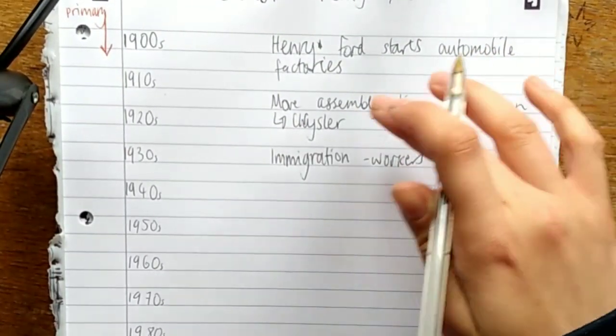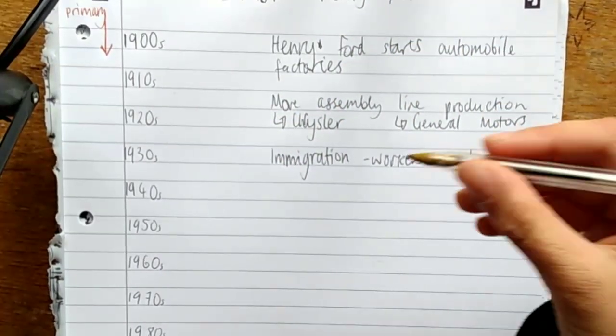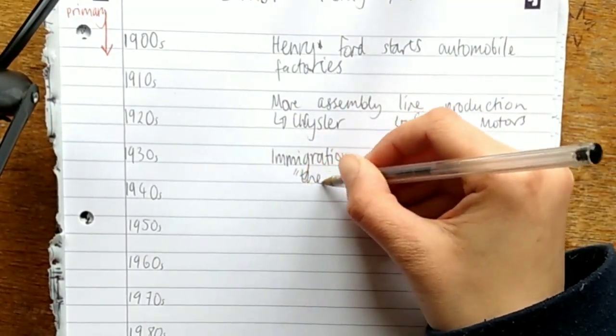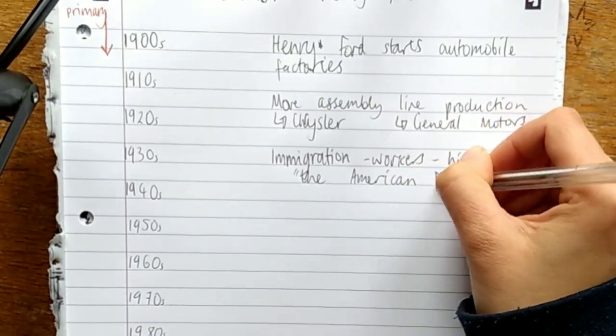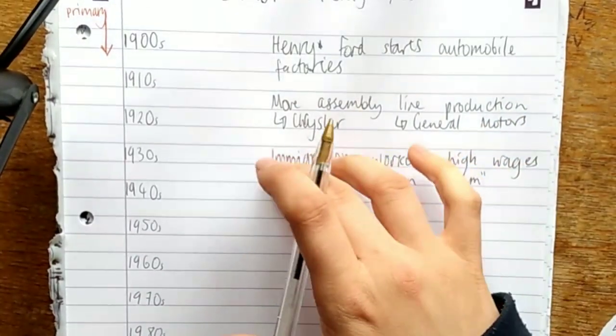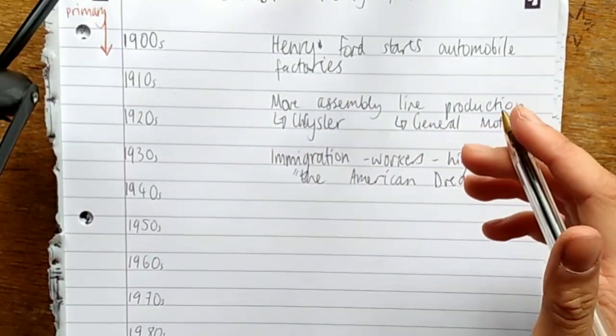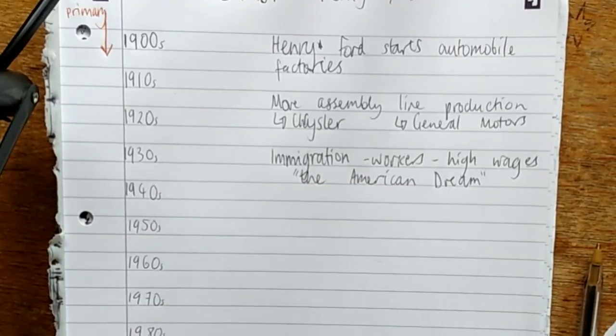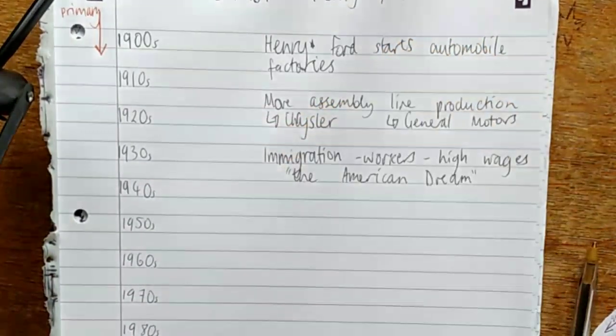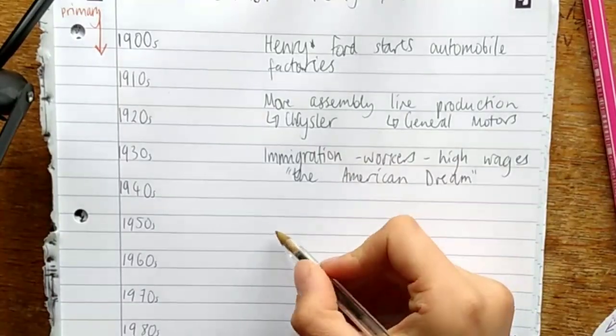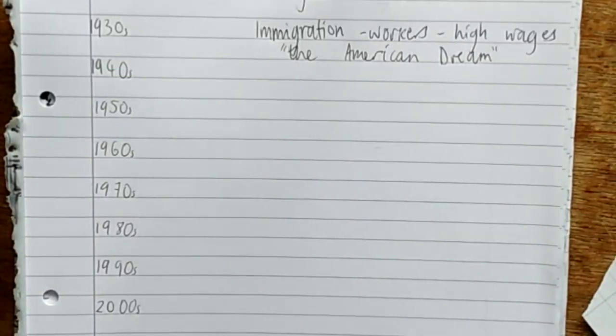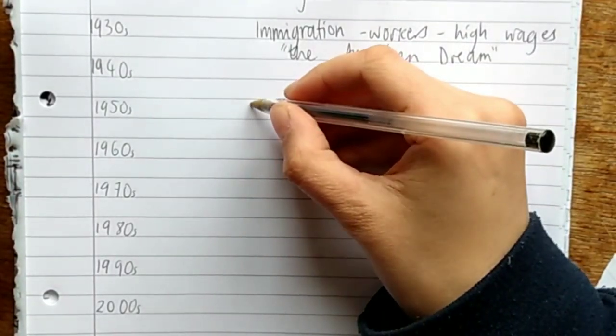During the roaring 20s, the economy boomed in Detroit and people came in to live the American dream. Americans could afford the cars that they were making because they had high enough wages to buy the cars that were actually made in the USA. Due to a lot of immigration into Detroit, the population sharply rose.